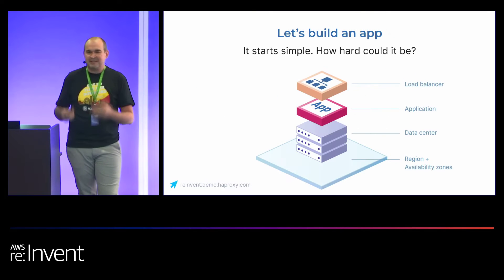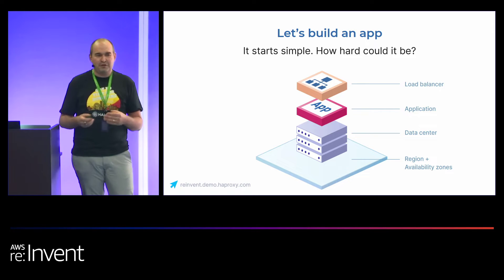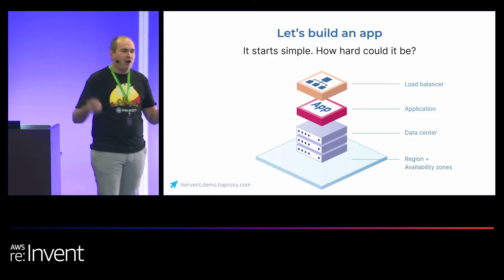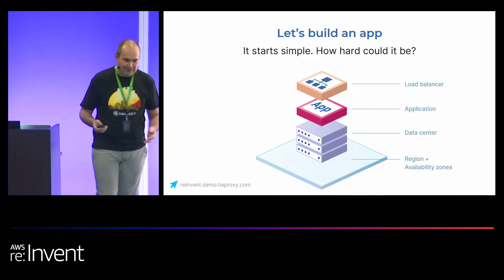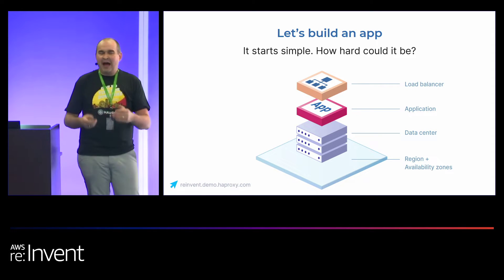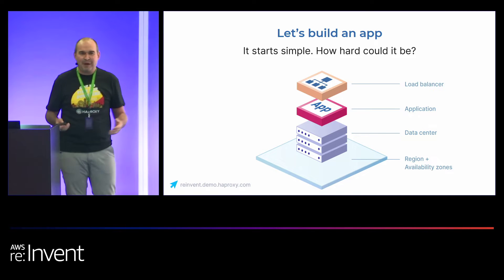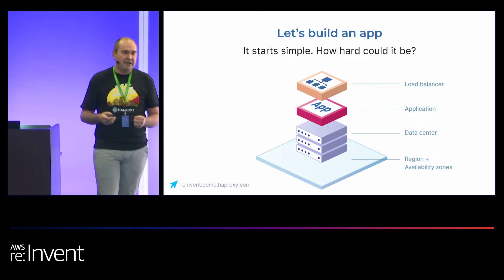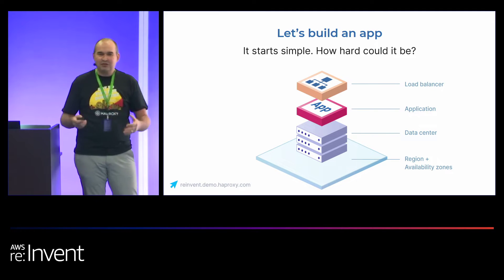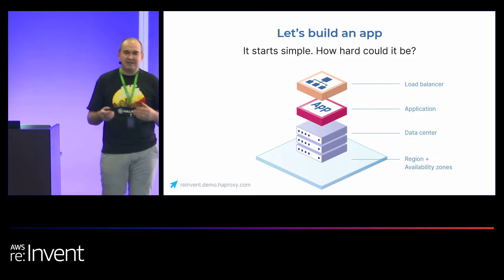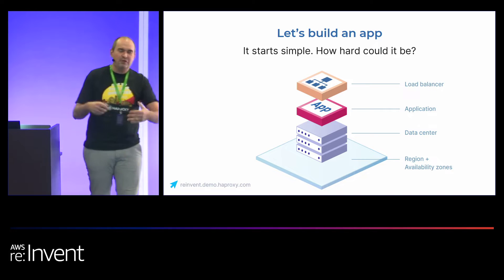It starts really simple. Whether you're using AWS already or moving from a legacy on-premise load balancer, you say, I'm going to build an app — how hard could it be? You build an application server, put a load balancer in front of it, and spin it up on an EC2 instance. The good news is that it usually works. Those projects are usually extremely successful and they're like a beachhead for moving to the cloud.